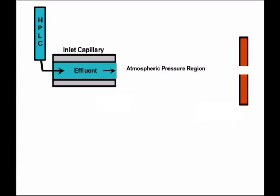On the opposite side of the schematic diagram on the screen — that is, on the right-hand side — there's a capillary opening of some sort, and this varies from one manufacturer's design to another. That capillary opening then leads eventually to the mass spectrometer through an initially low vacuum or low pressure region, and then on into the high vacuum region of the mass spectrometer.